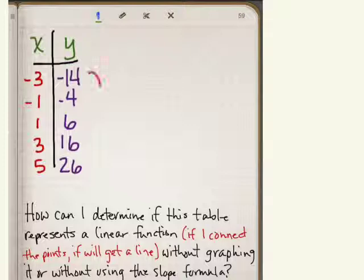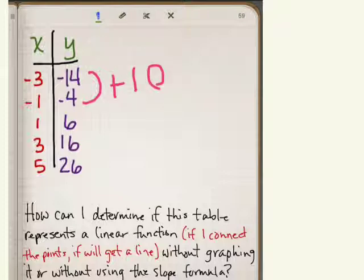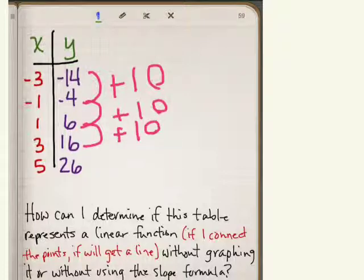From negative 14 when you go to negative 4, you're just adding positive 10. And then from negative 4 to 6 is just adding positive 10. From positive 6 to 16 is just adding 10, and from 16 to 26 is adding 10.